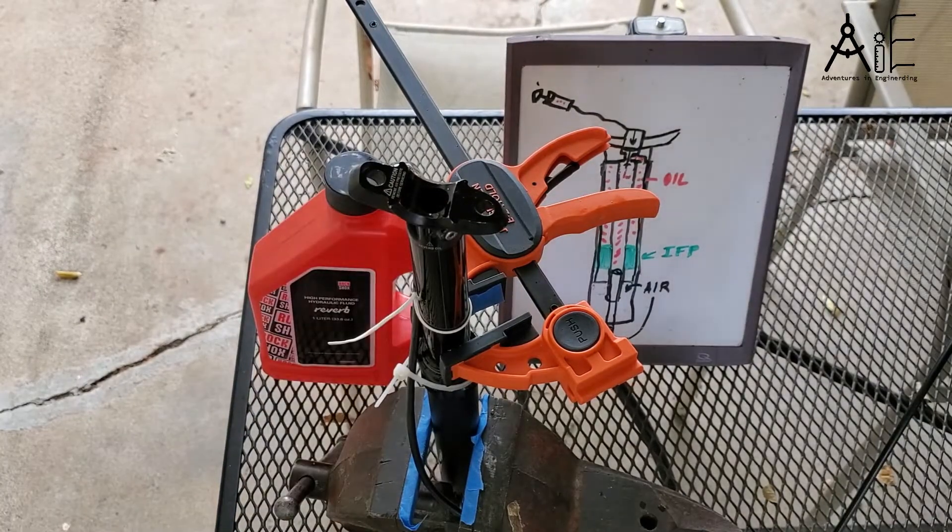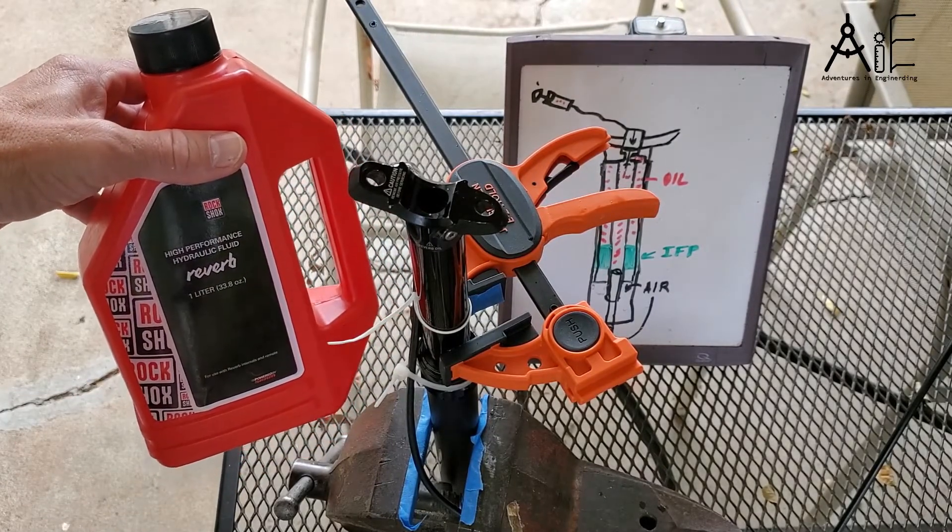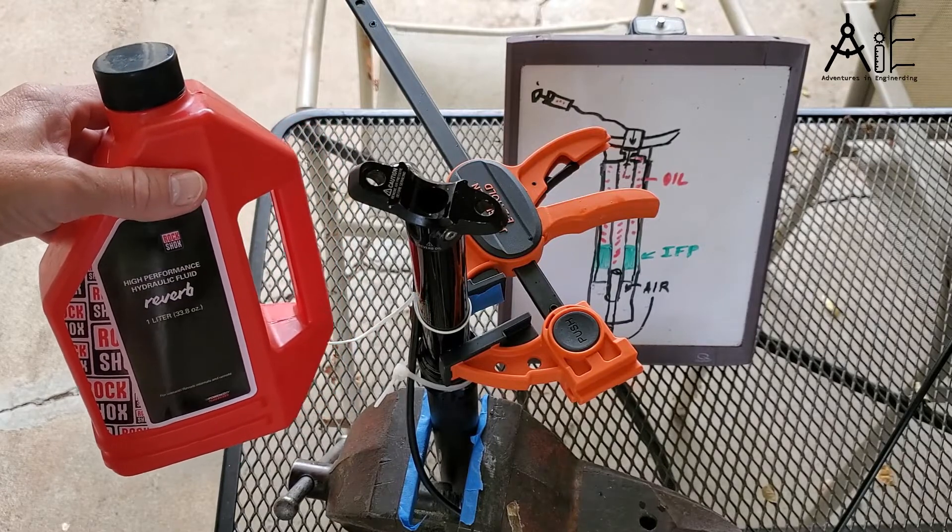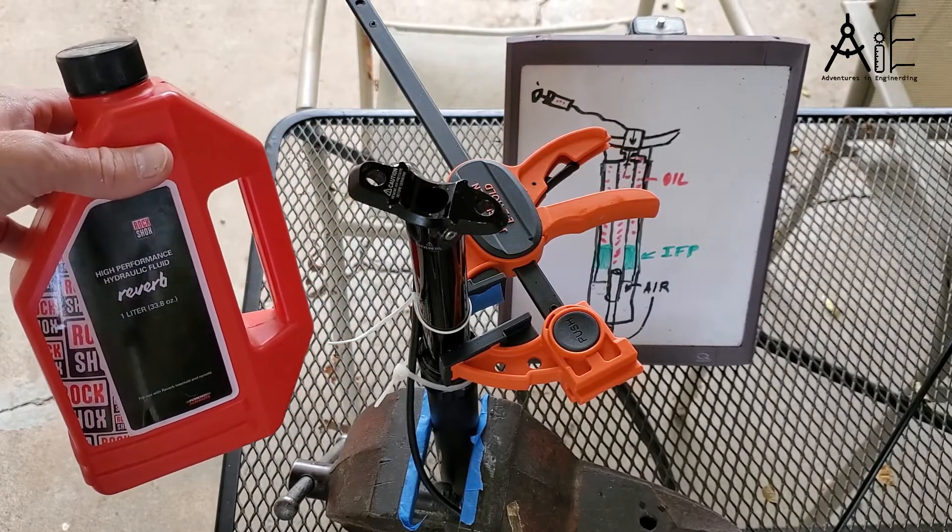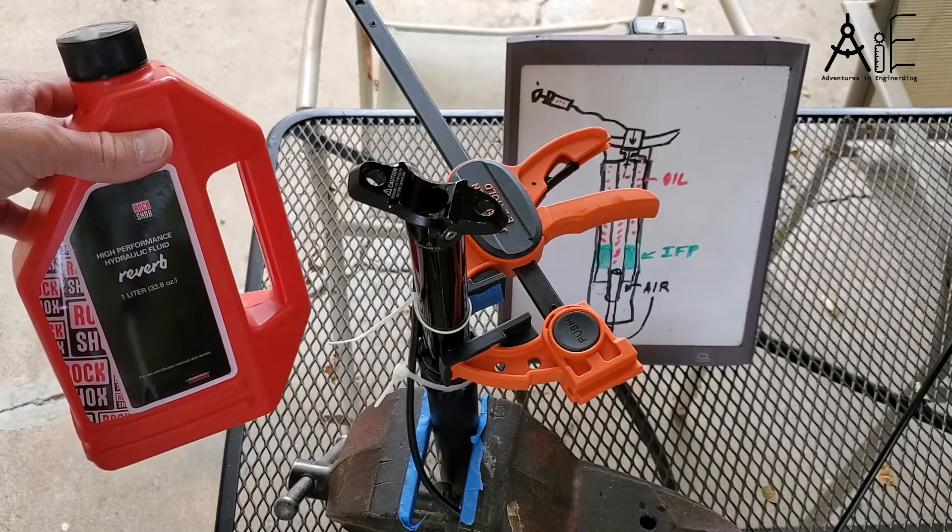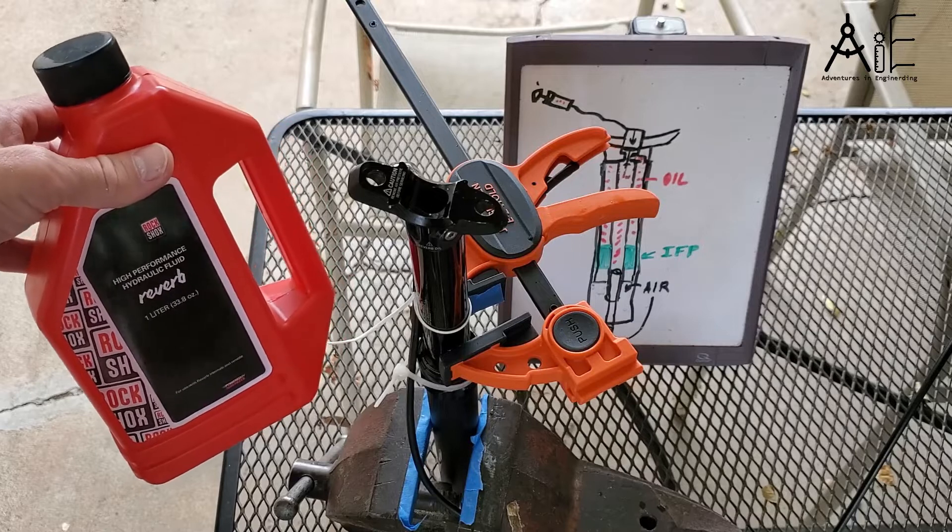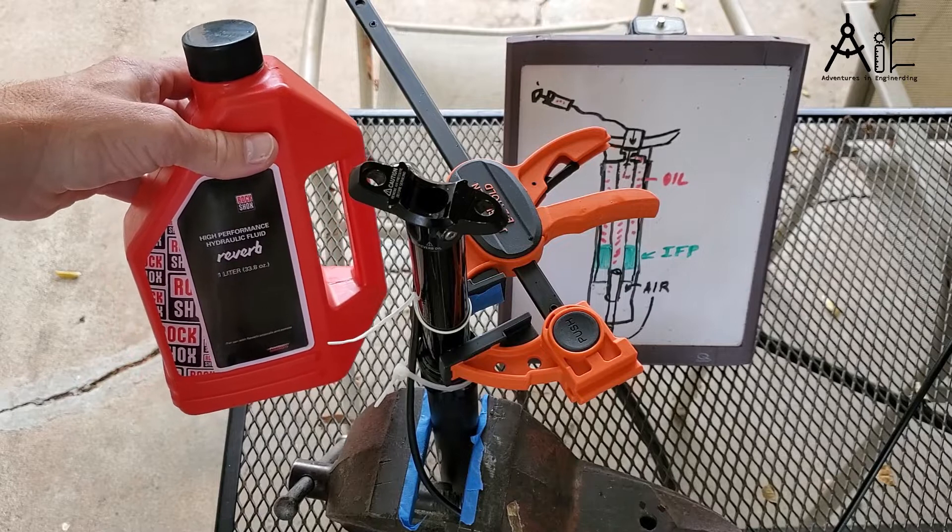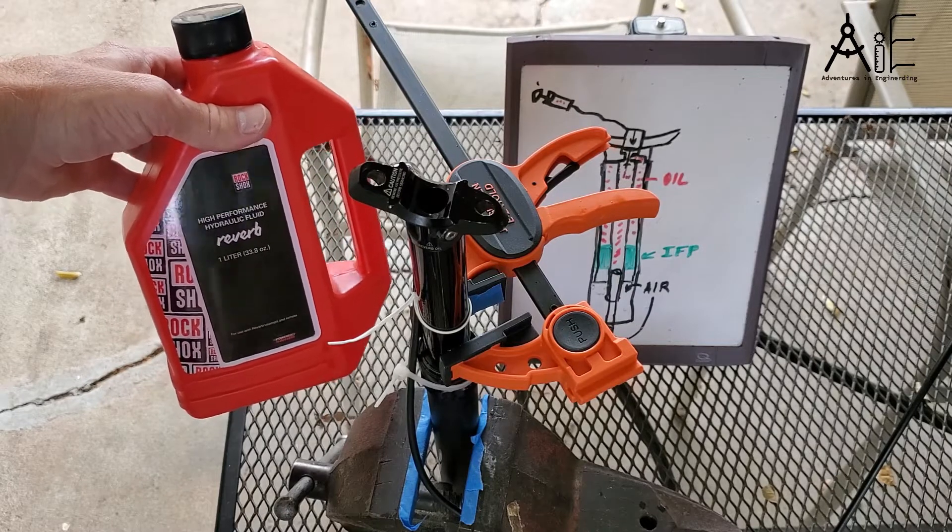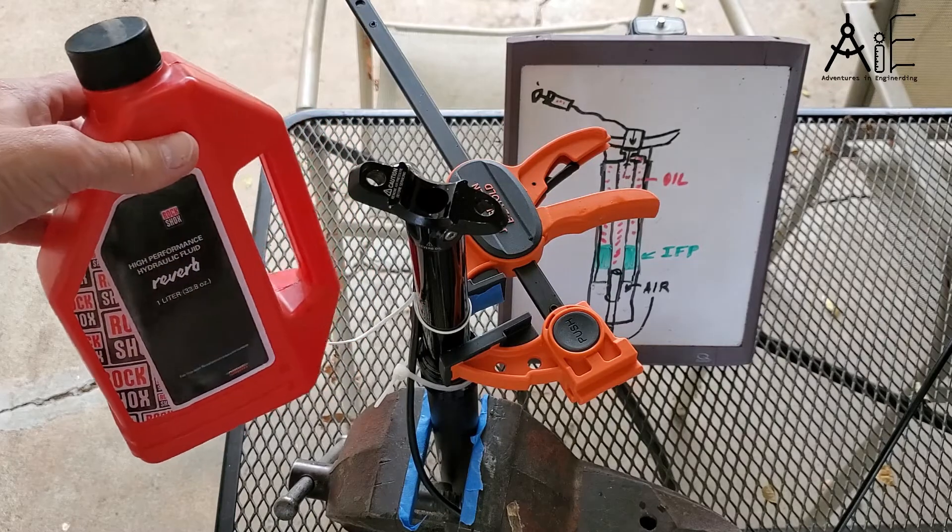I bought this giant container of reverb fluid because it really wasn't much more than buying a tiny one, and the tiny one was barely enough to rebuild the shock. So I figured I'd have it available for doing bleeds in the future, and also for Sram hydraulic brakes which use the same stuff, and front forks which I also have a Sram front fork too. Getting the big container was just economically better, but you don't have to get the big container.